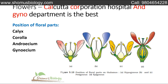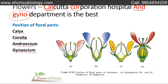Now we move to flowers. The mnemonic is: 'Calcutta Corporation Hospital and Gynecology Department is the best.' Cal stands for Calyx, Cor for Corolla, and for Androecium, Gyno for Gynoecium. These are the different parts of the flower. The positions are: hypogynous (A, B, C), perigynous, and epigynous (D).